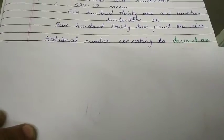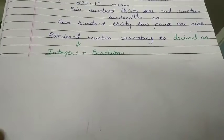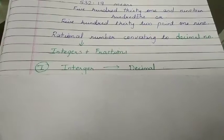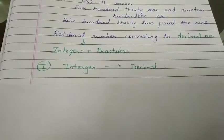Now, let's convert rational numbers to decimal numbers. Rational number means integers and fractions. Let's take one example of integers to decimal.